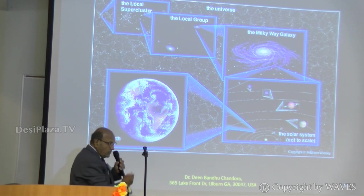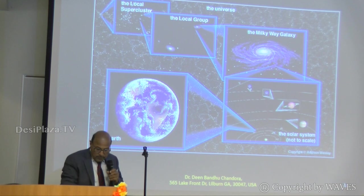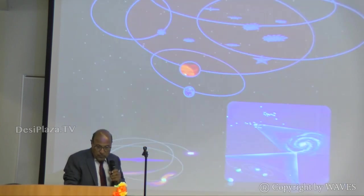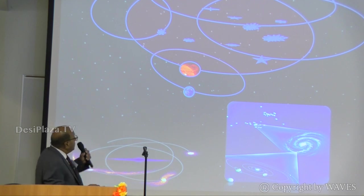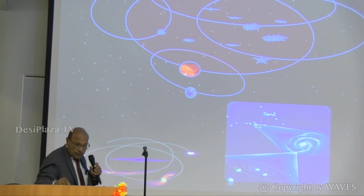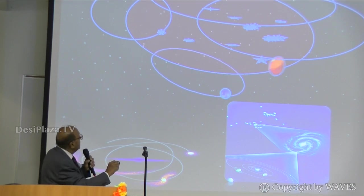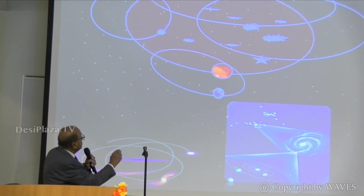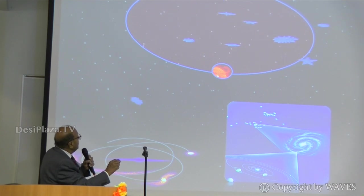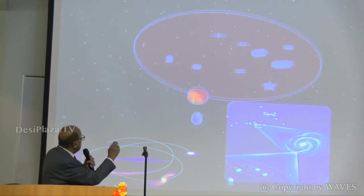And then from the supercluster, this is Earth rotating. This is all what we just told — it is just showing a dramatic representation of how the galaxies go all around and how these all rotate around.